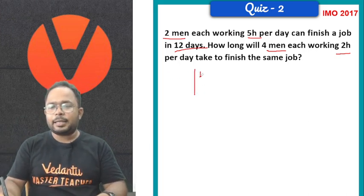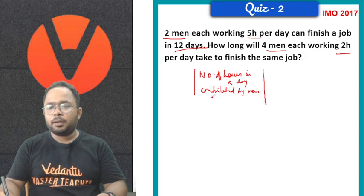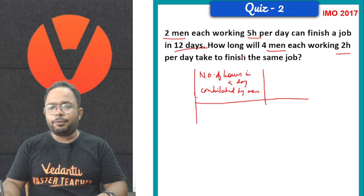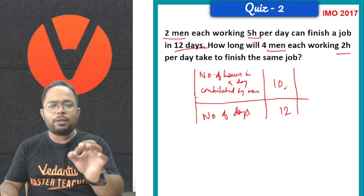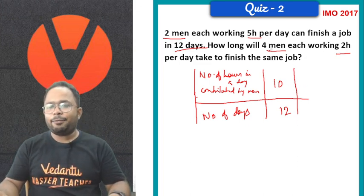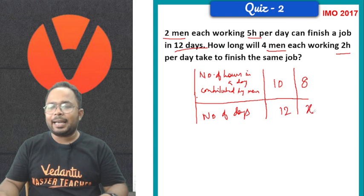Let the number of hours in a day contributed by men. So, in first case, two men is contributing five hours per men. So, that means, 10 hours we are getting a contribution in a whole day. And if this continues for number of days is 12. Now, let us say, four men, two hours. That means eight hours a day they are contributing. So, let us say this is x.